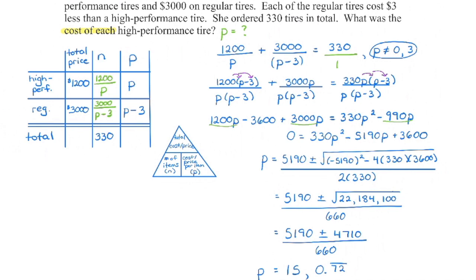The final step is to look at the context. We're looking for the cost of each high performance tire, which is variable P. However, the regular tire costs $3 less than P, so we can't have a cost of 73 cents because $3 less would be a negative cost. That answer is not reasonable in context, which means each high performance tire is $15 and each regular tire is $15 minus $3, which is $12.